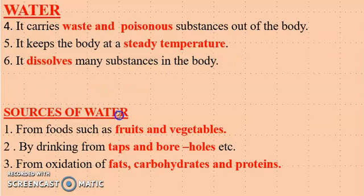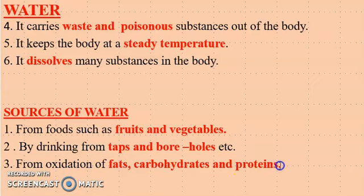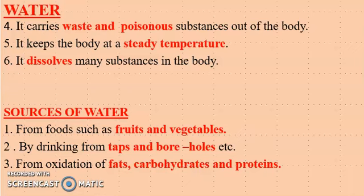Now sources of water — we have three main sources. One, from food such as fruits and vegetables. We also get water by drinking from taps, boreholes, and wells. And finally, we have it from the oxidation of fats, carbohydrates and proteins. Oxidation means the loss of electrons. So usually during this process, water is produced and stored, and especially when you are fasting, it stores a lot of water in your system — that is why you are able to carry on with your fasting.